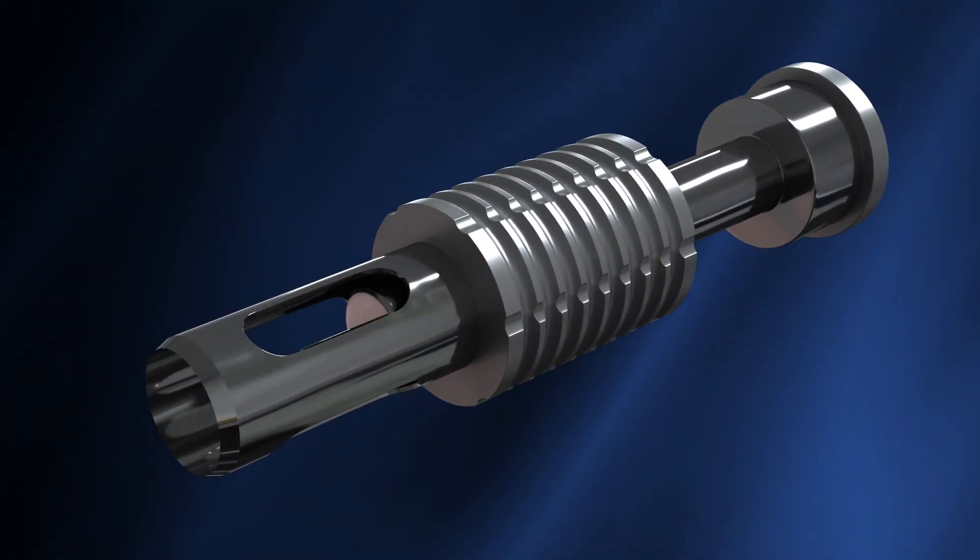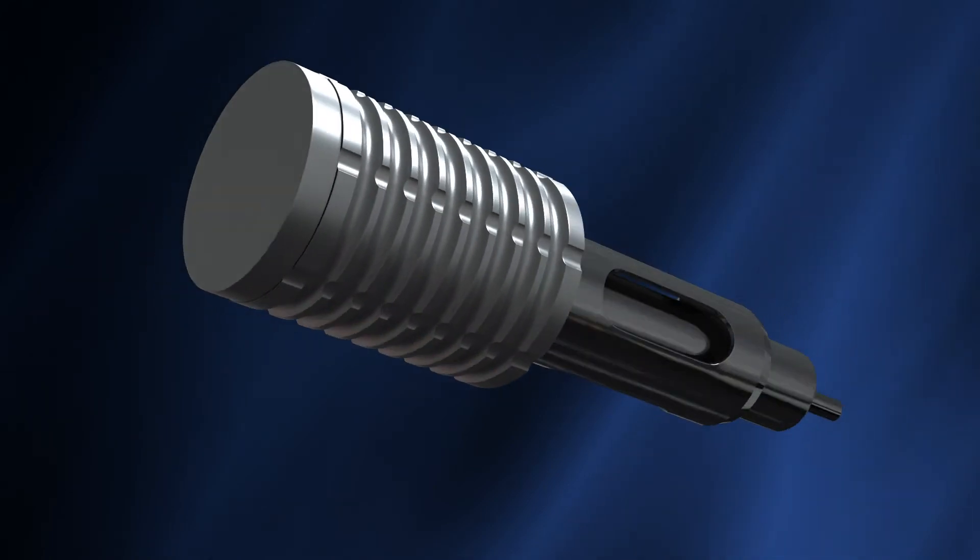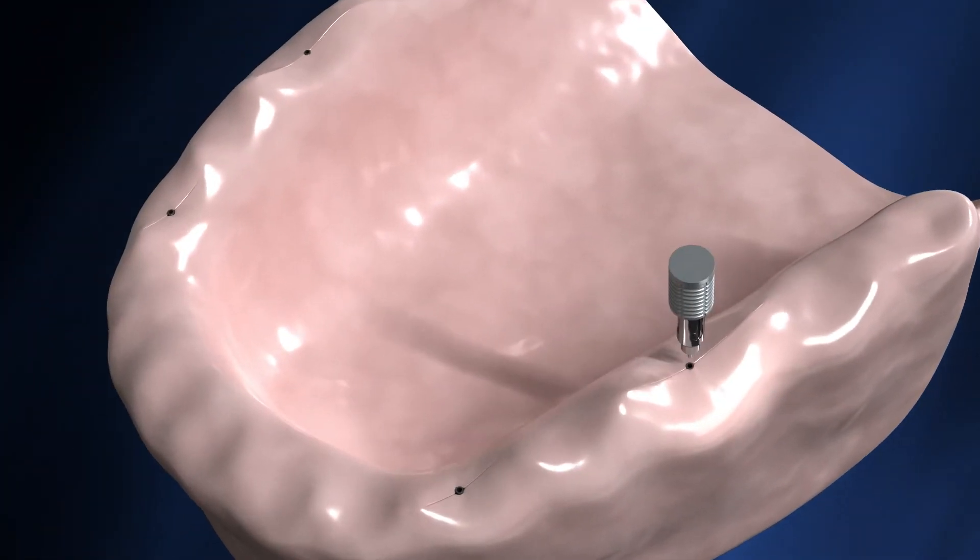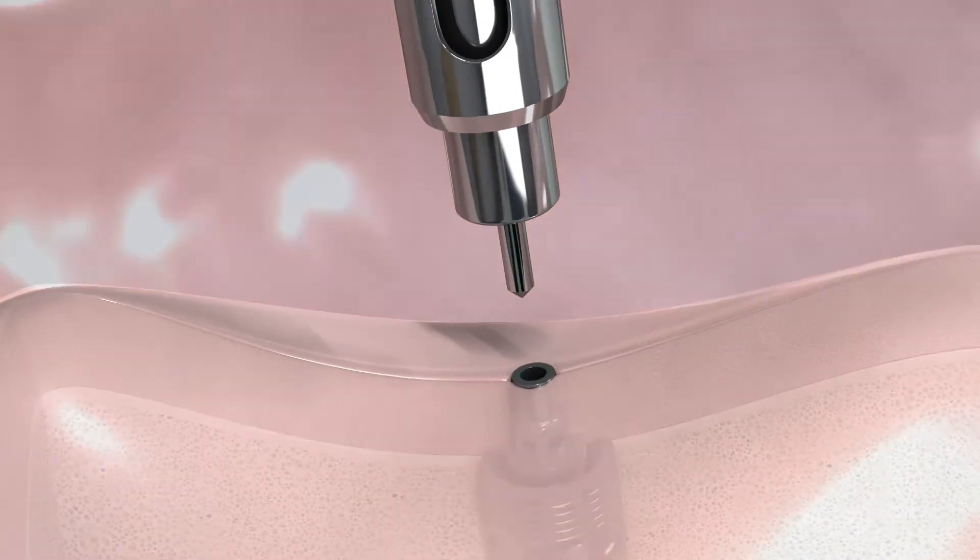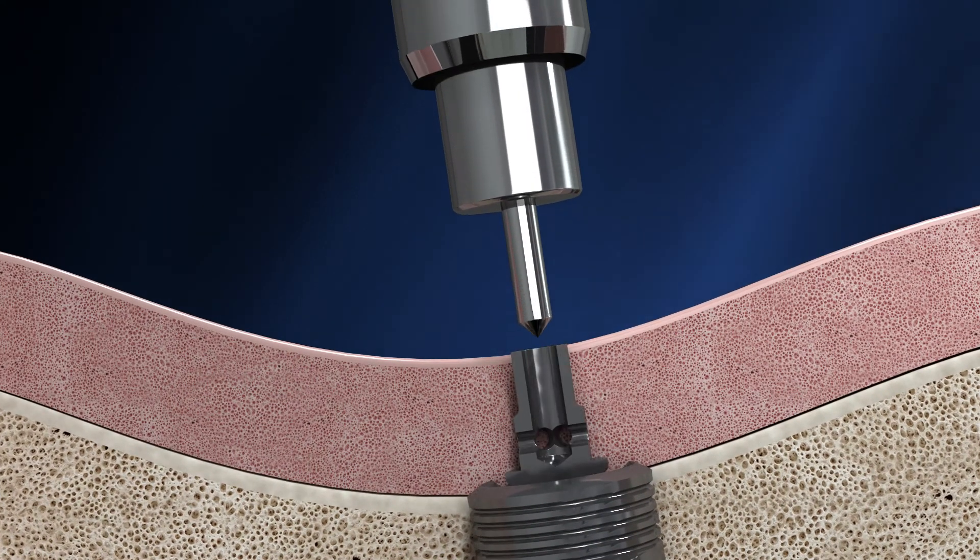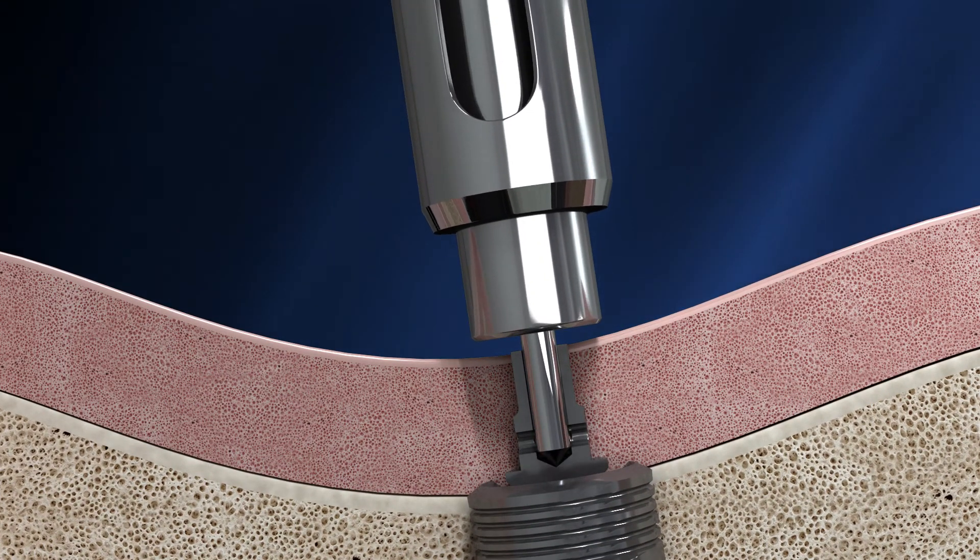Then, use the proprietary Pathfinder punch, exactly fitting the irrigation tunnel, to cut a precise amount of soft tissue in the right direction and angulation, all the way down to the implant platform.